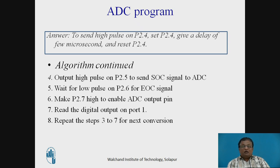The next step is to output a high pulse on P2.5 to send the SOC signal to the ADC. Then wait for a low pulse on P2.6 for the EOC signal. To read the digital output, make P2.7 high to enable the output. Then read the digital output on port 1, and repeat steps 3 to 7 for the next conversion.